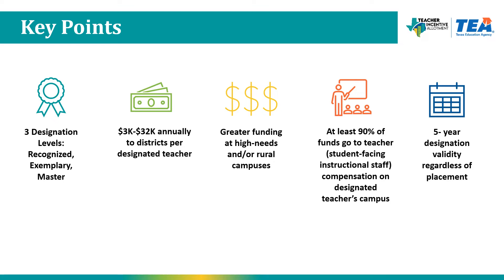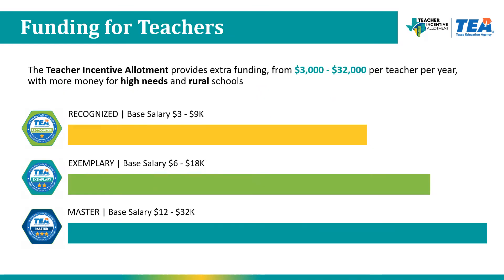Districts must spend at least 90% of the funds on teacher compensation on the campus where the designated teacher works. Once a designation is issued, it has a five-year validity period regardless of whether the teacher is teaching or has moved campuses. The Teacher Incentive Allotment is funded through the Foundation School Program. The recognized designation allotment ranges from $3,000 to $9,000; exemplary from $6,000 to $18,000; and master from $12,000 to $32,000.